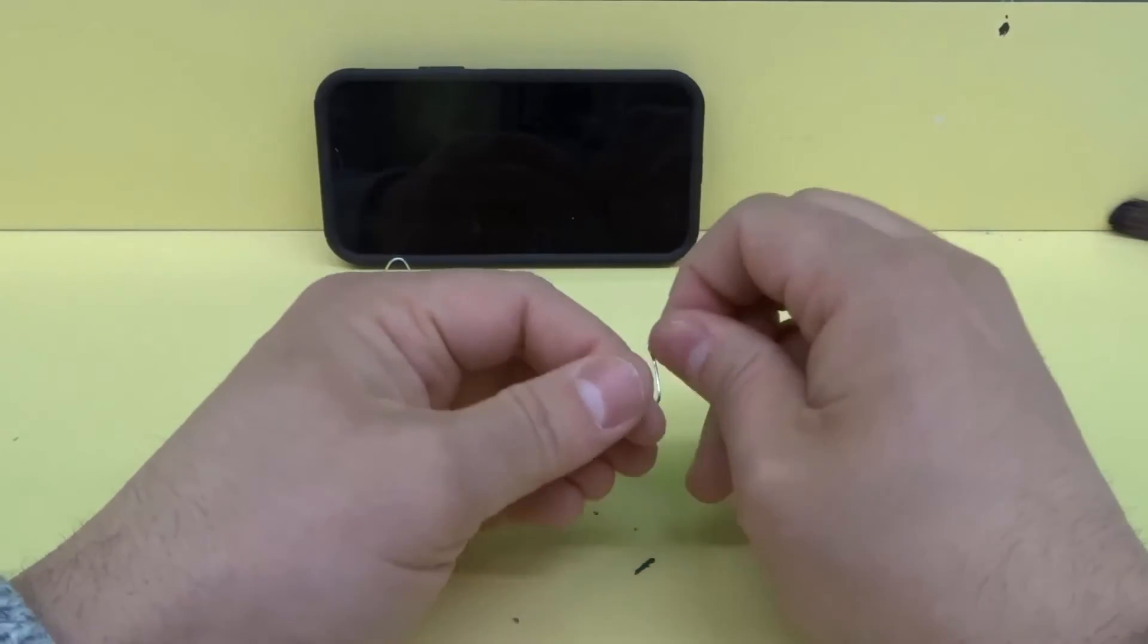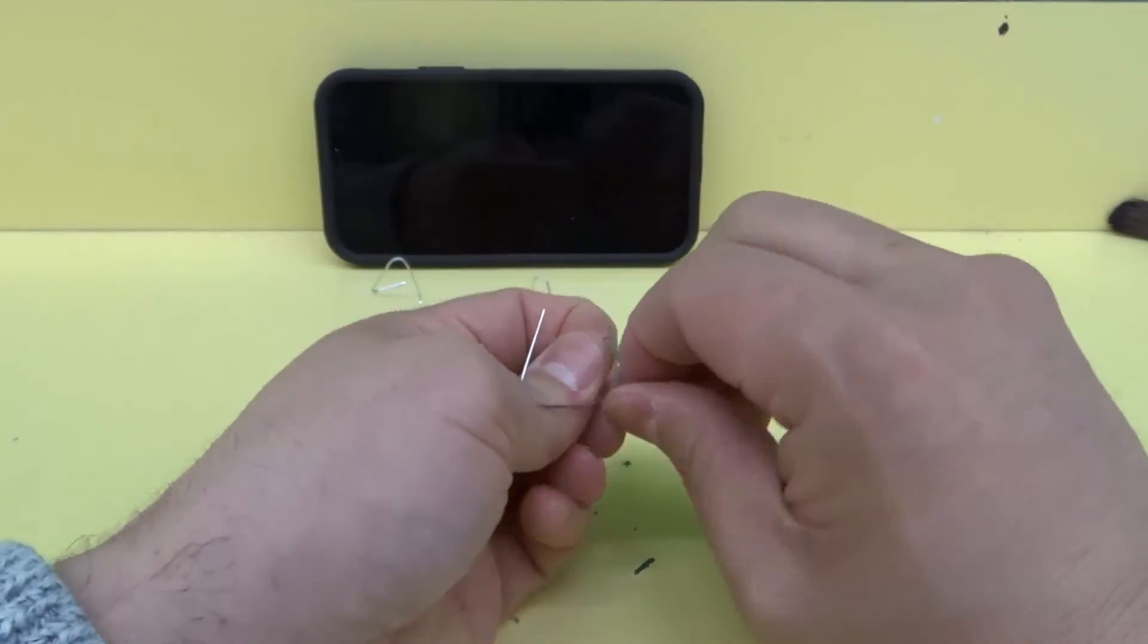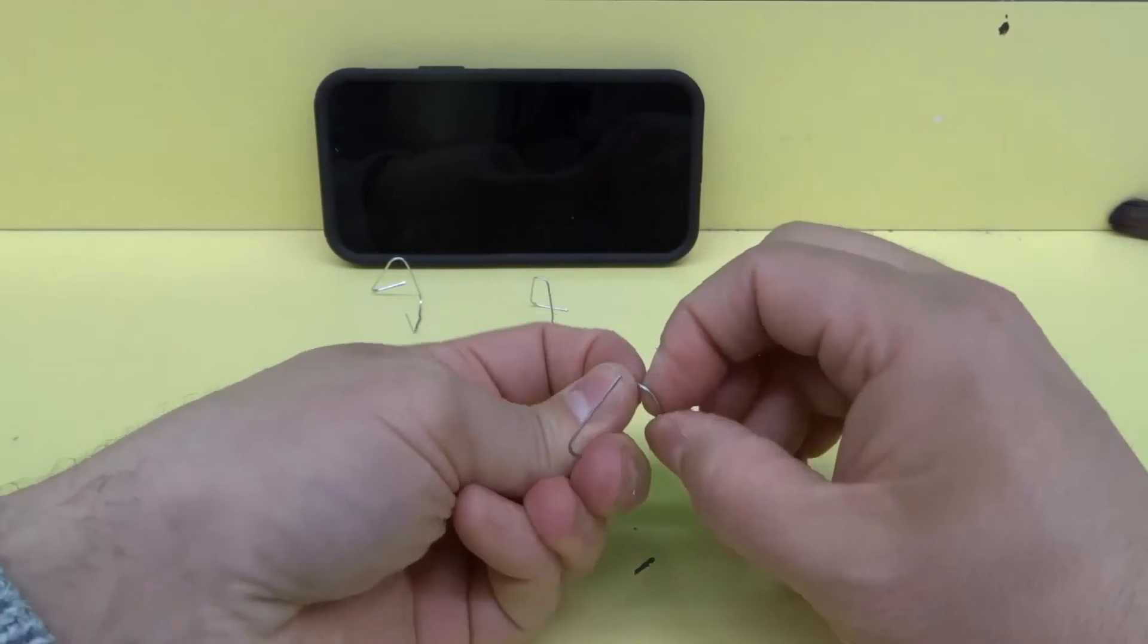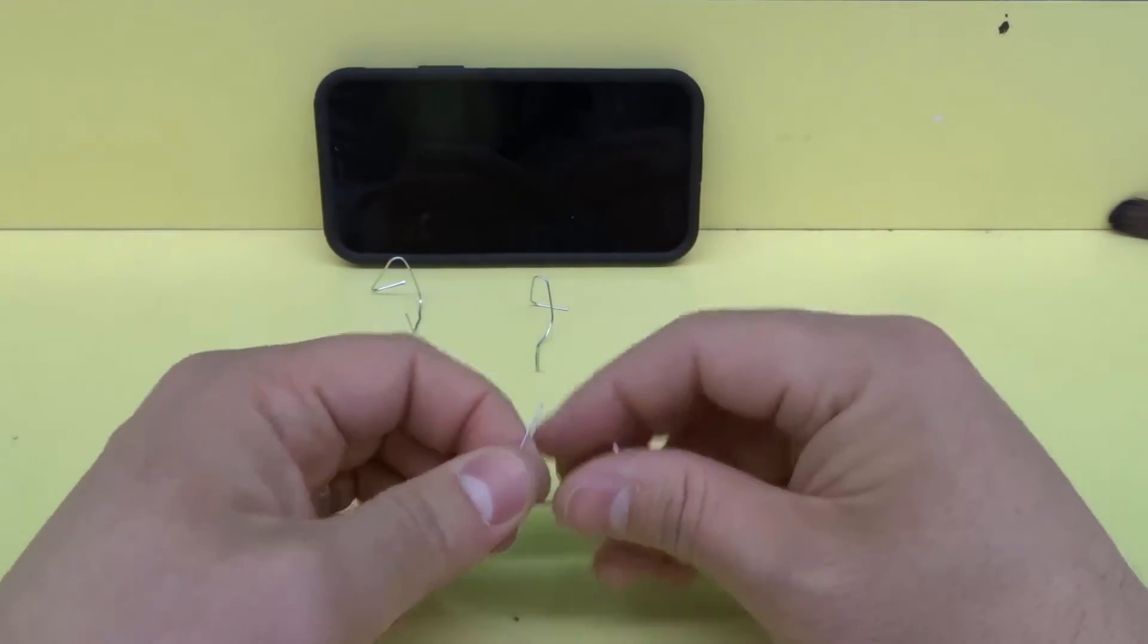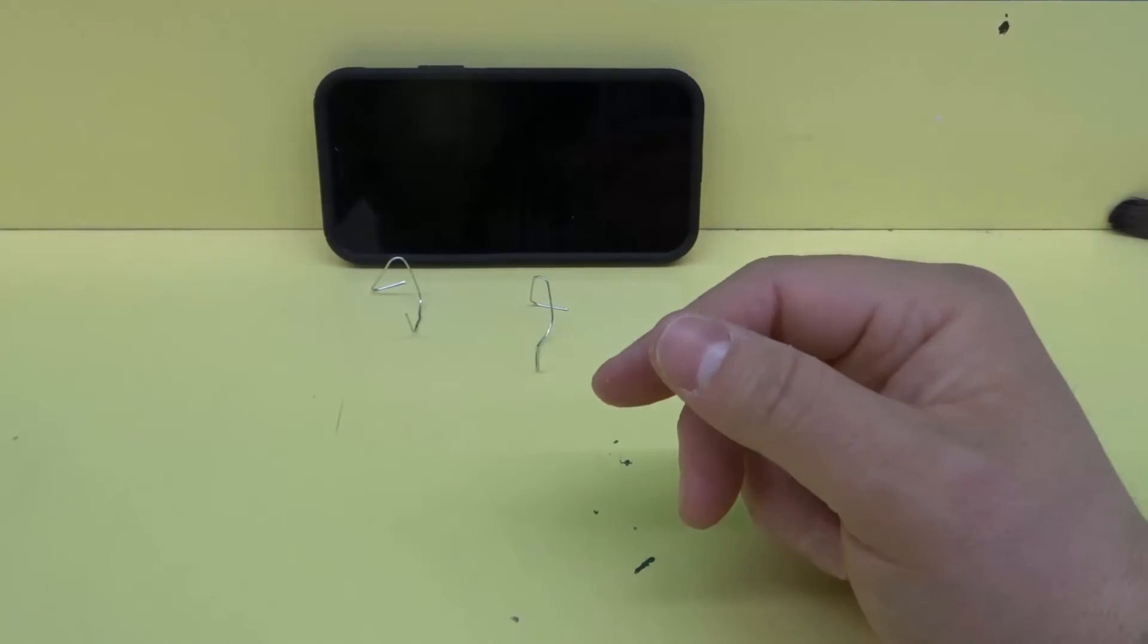As you can see right over here, this is an example of a higher stand that we've created. It works really well. You just take your paperclips and bend them to be in the position of almost like a cell phone stand. Another example I'll show you, which is more common to the one I have right there.